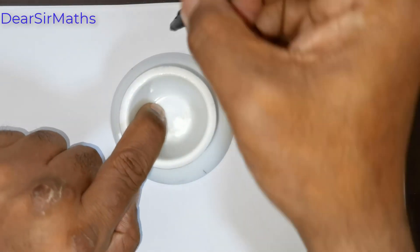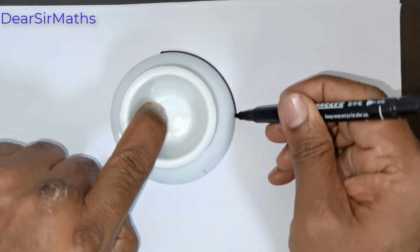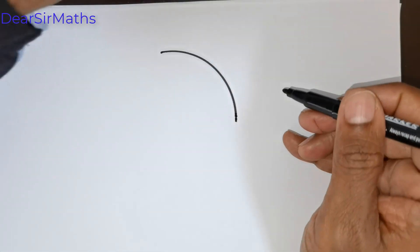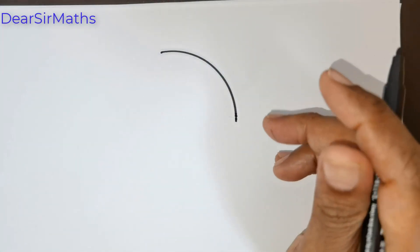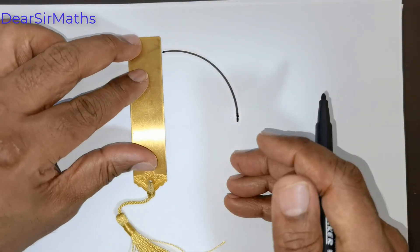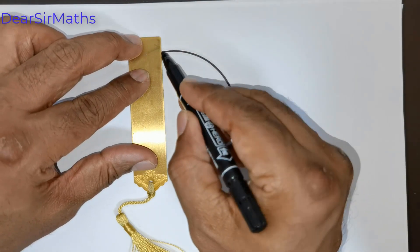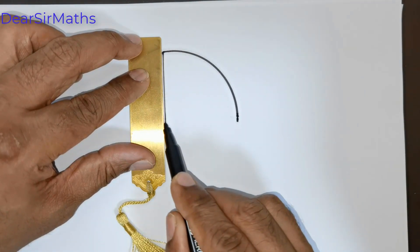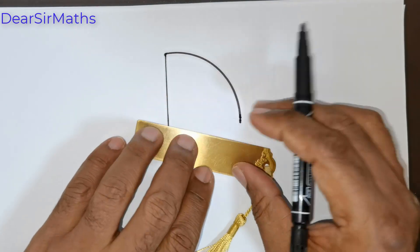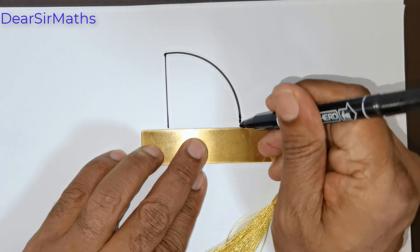Today everybody, we have been given a quarter circle. Let me draw the quarter circle. This is just an approximate figure.